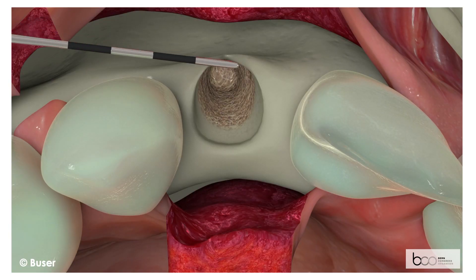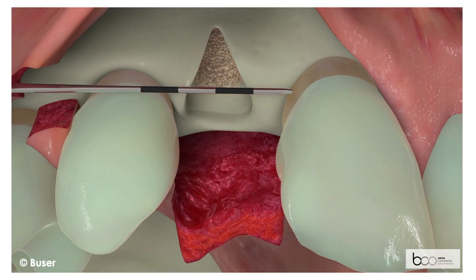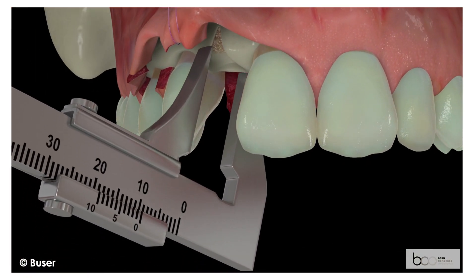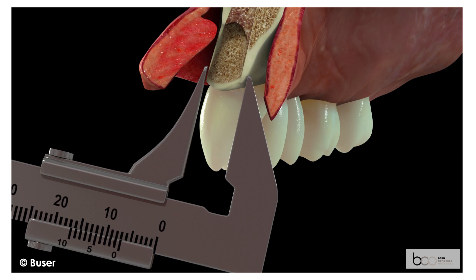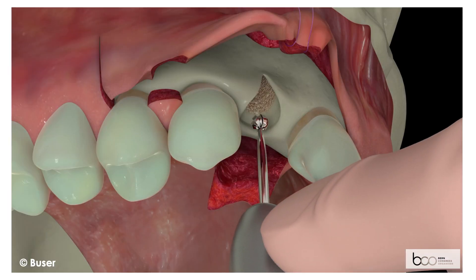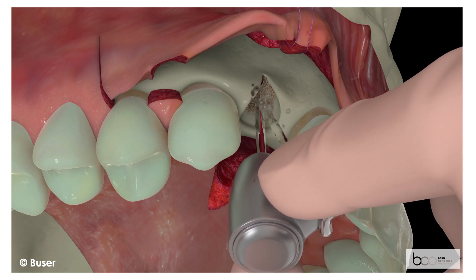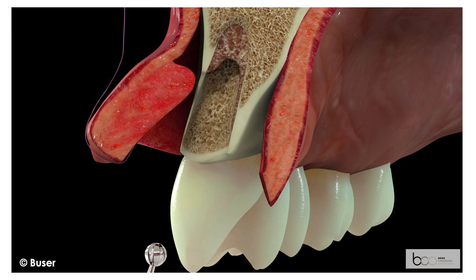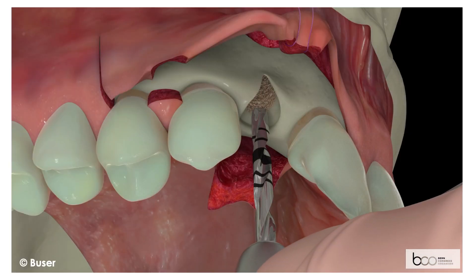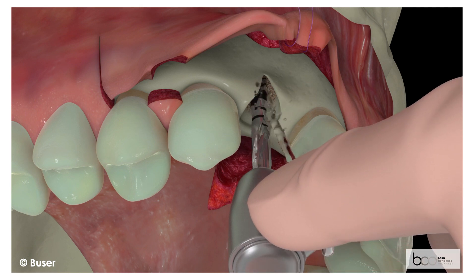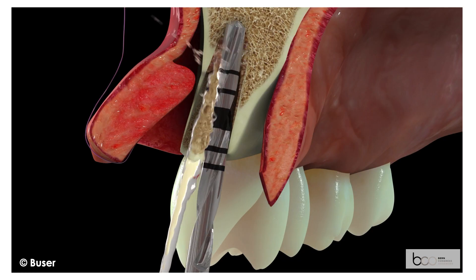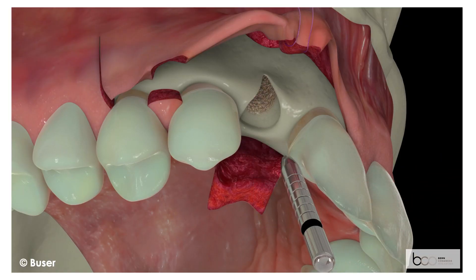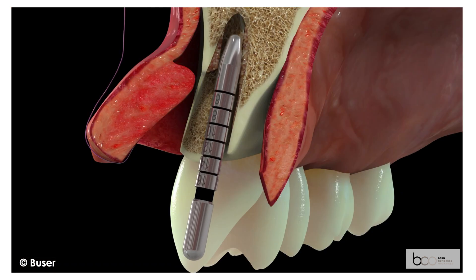The surgery continues with examination of the local anatomy using a periodontal probe. The crest width is analysed with a caliper, which should measure at least 6 mm oro-facially. Implant bed preparation is initiated with a number 2 round burr preparing into the apical bone structure, followed by the first spiral drill of 2.2 mm diameter at a drill speed of 800 rpm. Bone preparation is done with copious cooling using chilled sterile saline. The depth gauge is inserted to check the sink depth and the implant axis.